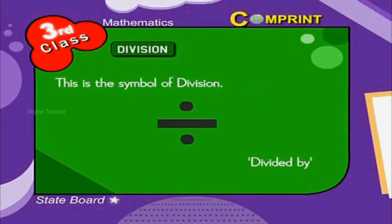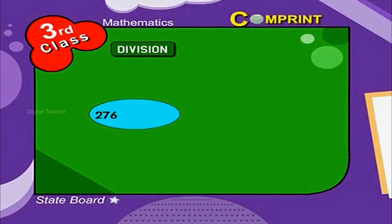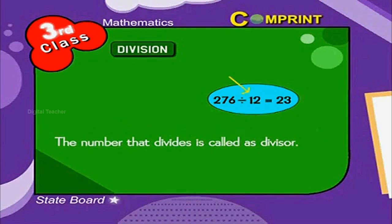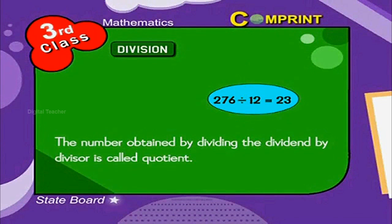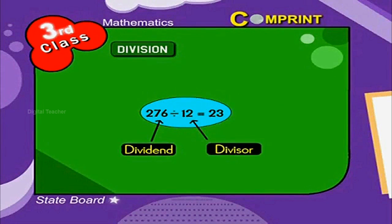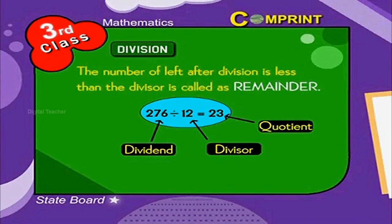This is the symbol of division. It is called as division. The number that divides is called the divisor. The number obtained by dividing the dividend by the divisor is called the quotient. In this picture, 276 is the dividend, 12 is the divisor, and 23 is the quotient. The number left after division that is less than the divisor is called the remainder.